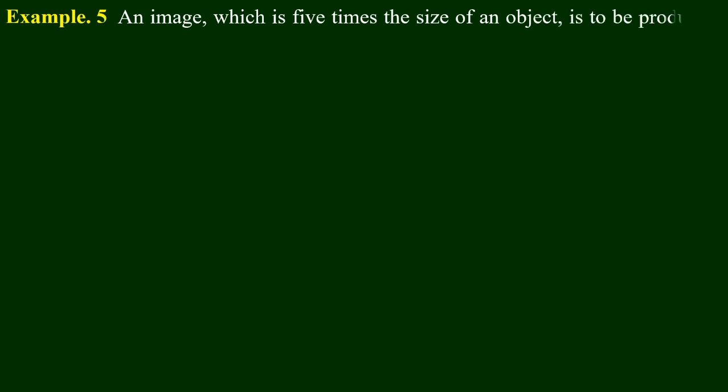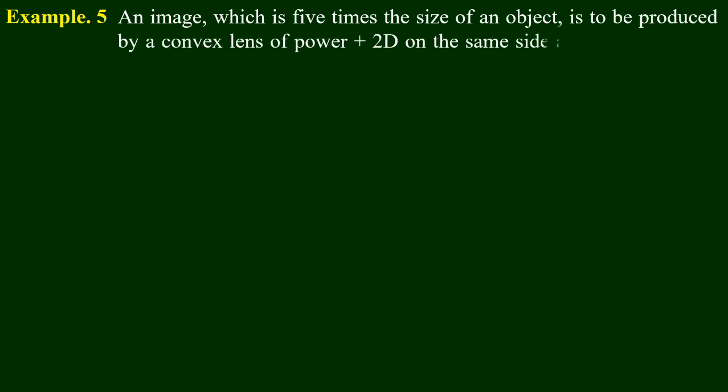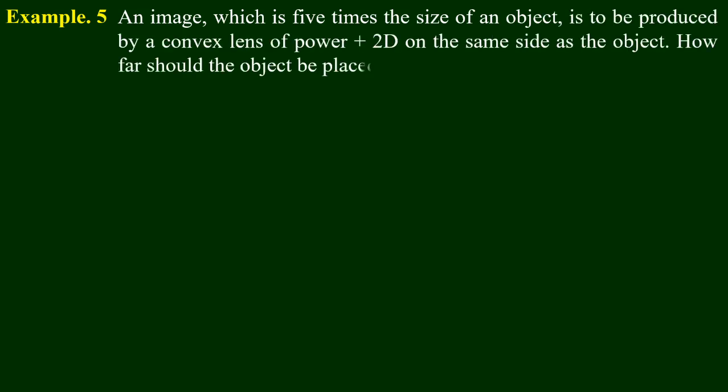In lesson 5, we will review the exam based on review exercises, including exam 5.5 and 5.6b. The problem: an image which is 5 times the size of an object is to be produced. How far should the object be placed from the lens?